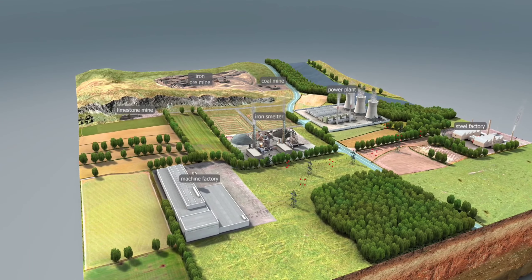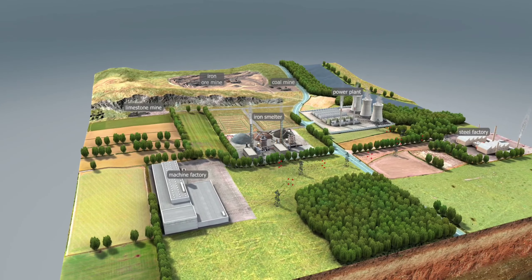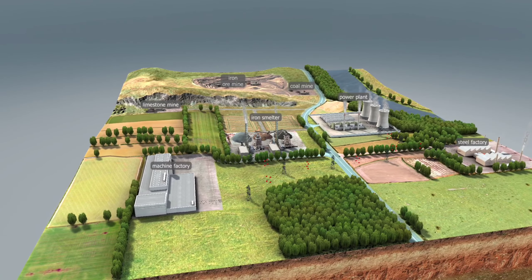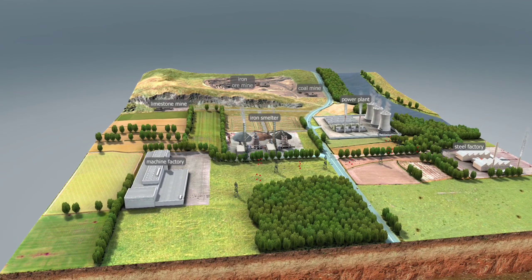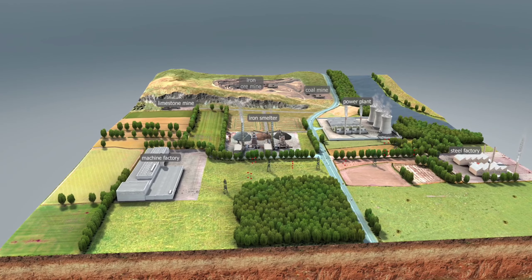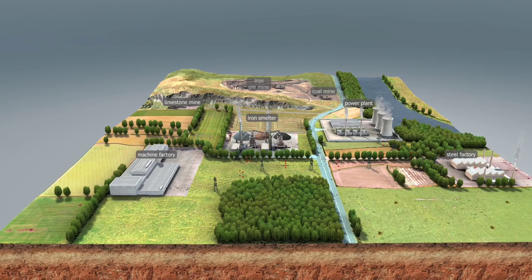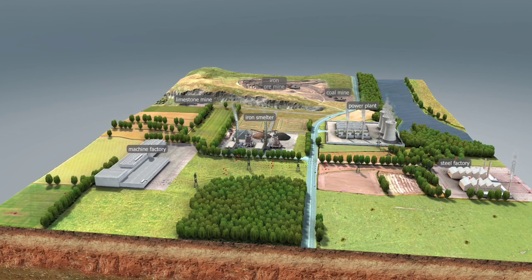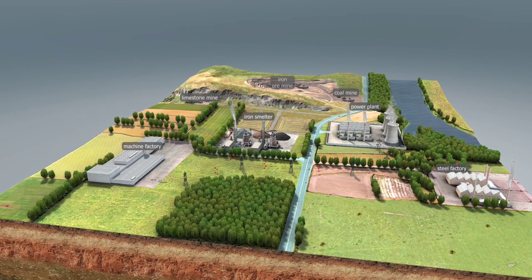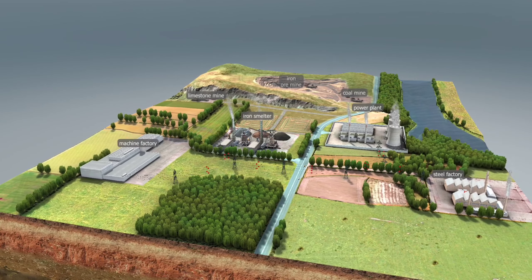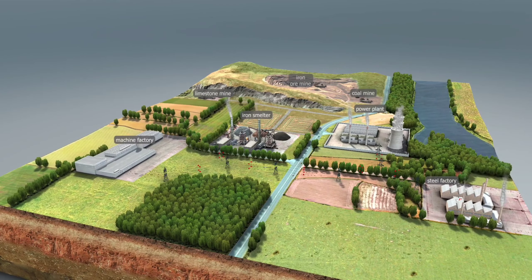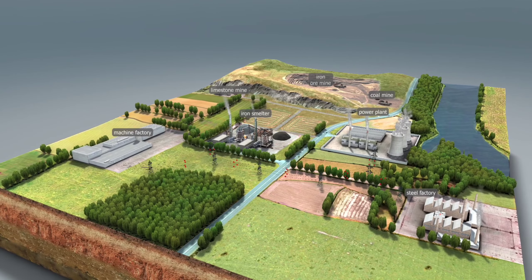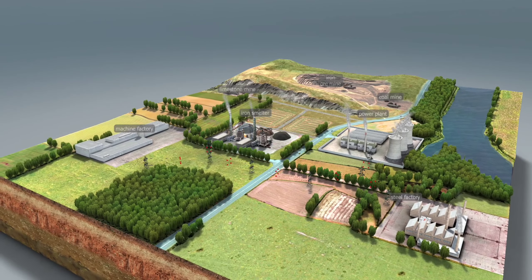The iron ore extracted in mines is broken into fist-sized pieces. Low iron content pieces are removed. The iron ore is then taken to a smelting facility where it is converted into pig iron using coke.